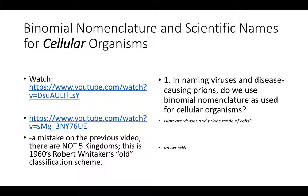When writing scientific names, we always want to make the scientific name appear different from surrounding text. If I'm writing on a piece of paper or on the board, I underline it to indicate it's a scientific name. If I'm using a word processor, I can use italics. Remember, since viruses and disease-causing prions are not cellular, we don't use binomial nomenclature in naming them.